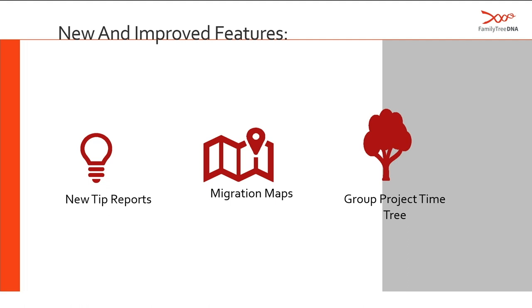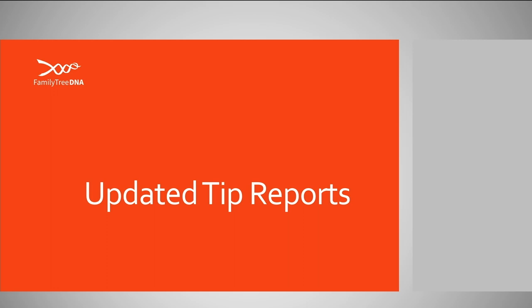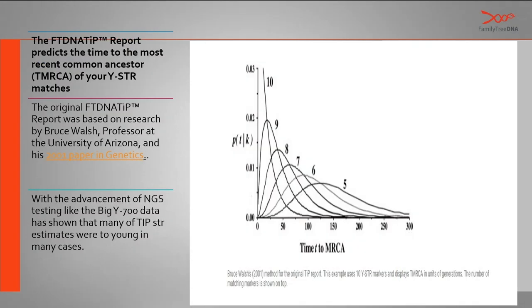Next we'll look at some new and improved features. First, we'll go over the TIP reports. The FTDNA TIP report predicts the time of most recent common ancestor using STRs, or short tandem repeats. This data was based off a 2001 paper by Bruce Walsh, a professor at the University of Arizona. But over the course of the years with the advancement of DNA testing, next-generation sequencing, and incorporation of academic and archaeological samples, we realized those estimates were just far too young. So we wanted to update that TIP report — we got a lot of requests from administrators who still use STRs.